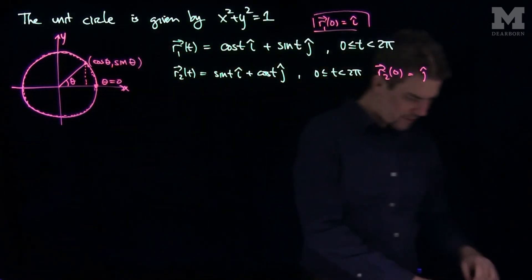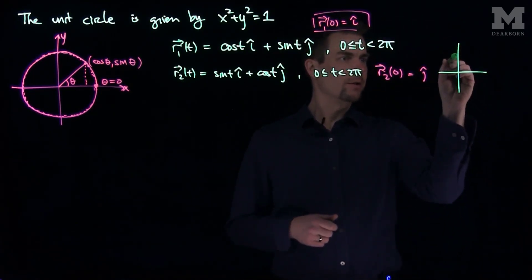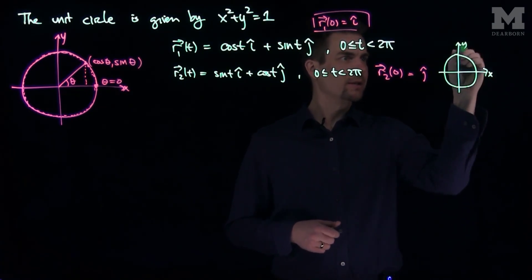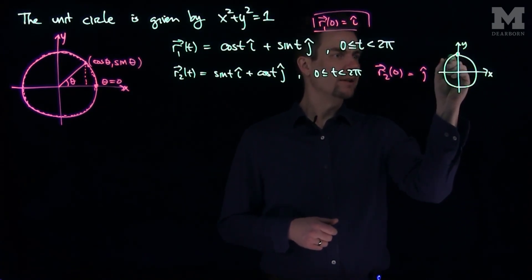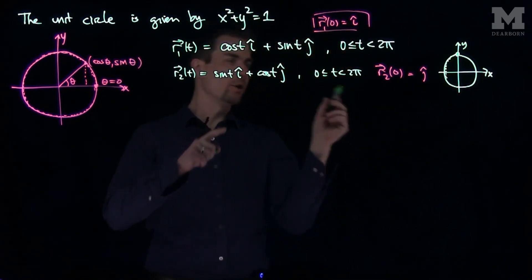And for r2, what we do is the following. For r2, we start on the unit circle, here's our unit circle, the x-axis and the y-axis, but now I start at j hat, and I trace around the unit circle. But now let's think, which way do we go?